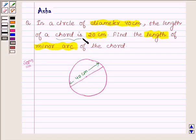Also we are given that there is a chord of 20 cm. So let this be a chord which is 20 cm. And we have to find the minor arc of the chord. That is, we are required to find the length of this arc.